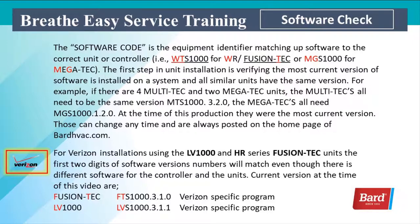The software code is the equipment identifier matching up software to the correct unit or controller. An example would be WTS is for the WR Fusion Tech; MGS 1000 is for the Mega Tech. The first step in unit installation is verifying that the most current version of software is installed on the system, and all similar units have the same version. For example, if there are four Multi-tech and two Mega Tech units, the Multi-techs all need to be the same version of MTS 1000 — that's the unit identifier — at version 3.2.0. The Mega Techs all need MGS 1000 version 1.2.0.